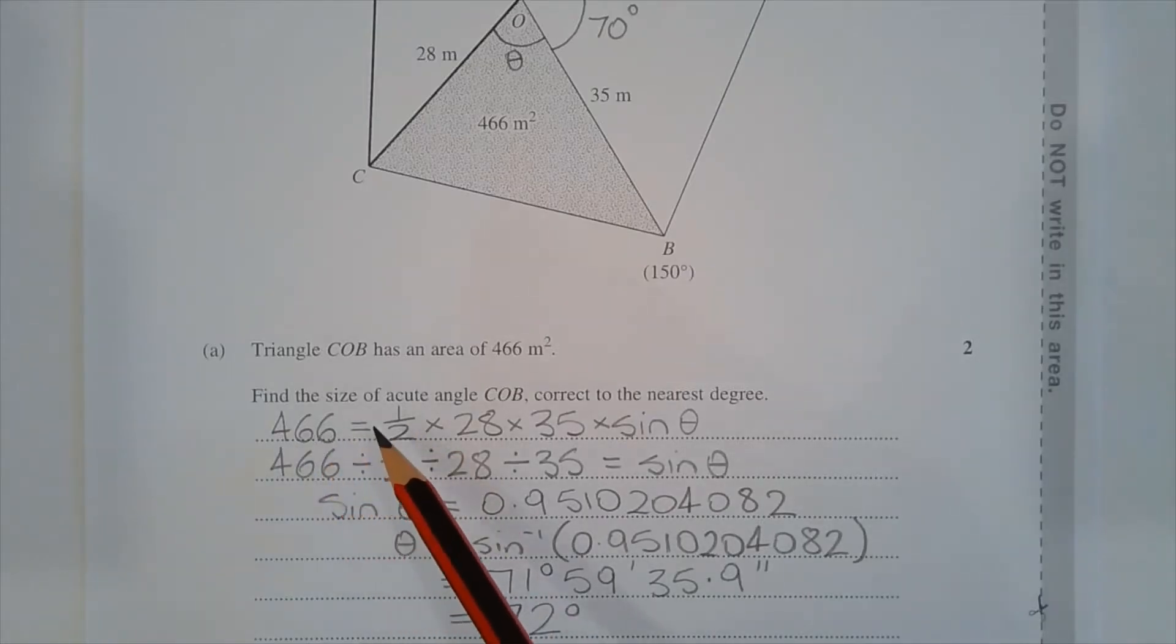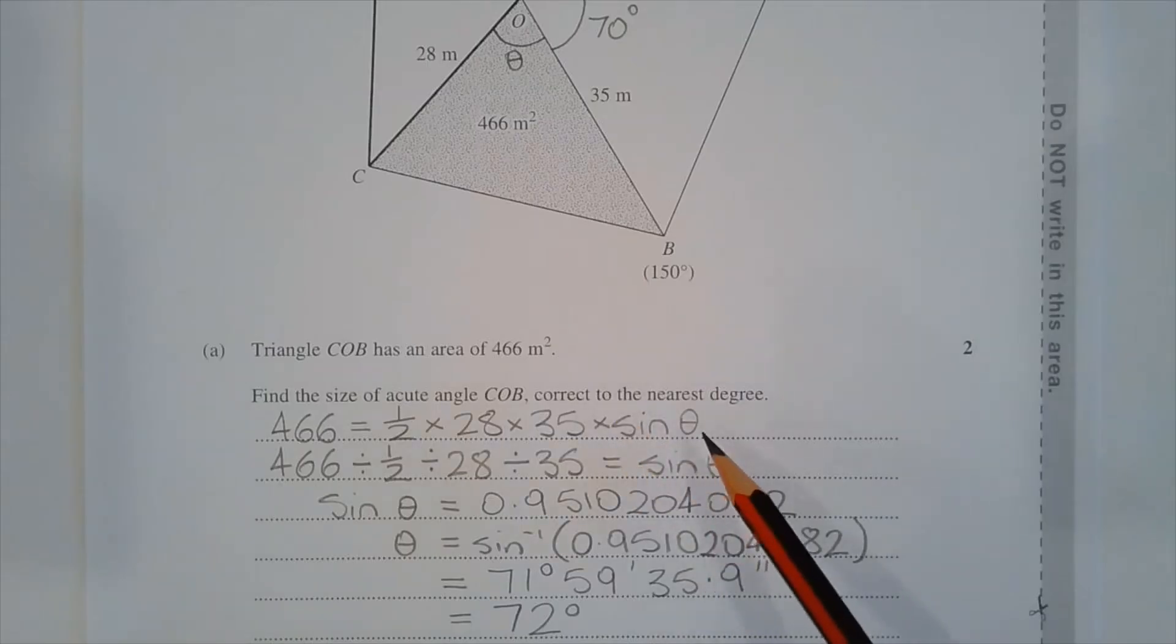Dividing the left hand side by half and then by 28 and by 35 to make sine of theta the subject of the formula, we have 466 divided by half divided by 28 divided by 35 is equal to sine of theta. Evaluating the left hand side, we have sine of theta is equal to 0.9510204082.